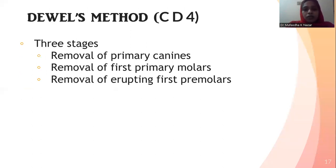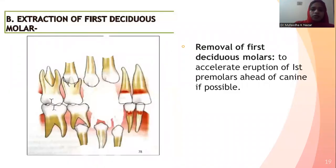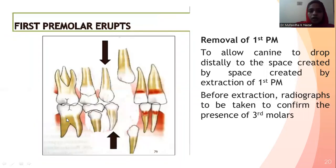Duell's method involves three stages. First stage is the removal of primary canines at the age of 8.5 years to permit the eruption and proper alignment of lateral incisors, with some improvement in central incisor alignment also. After the deciduous canines are removed, the deciduous first molars are removed before the eruption of the permanent canine. Once the first premolars erupt, these premolars are extracted to allow the canine to drop distally.